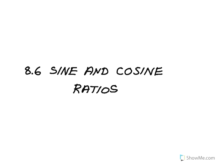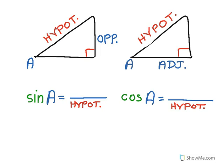Lesson 8.6 is about the sine and cosine ratios. Much like the tangent ratio, the sine ratio and cosine ratio represent relationships between side lengths with respect to a given angle.